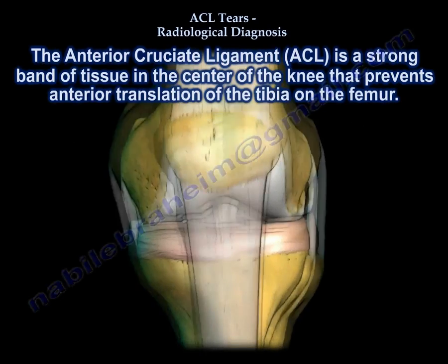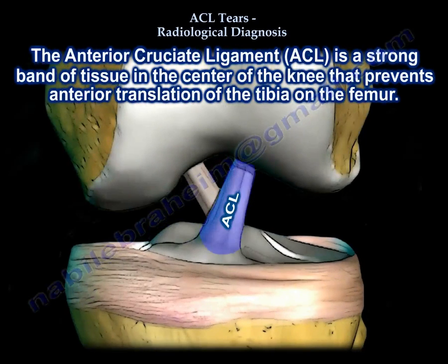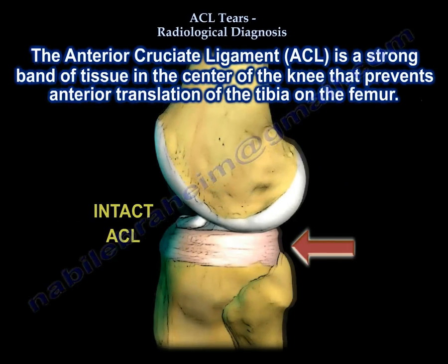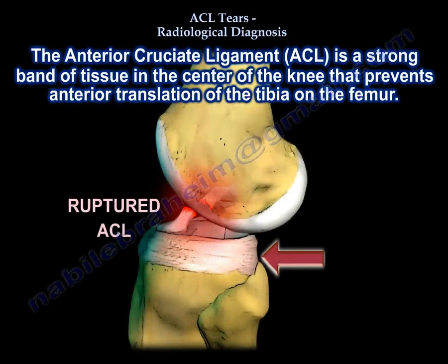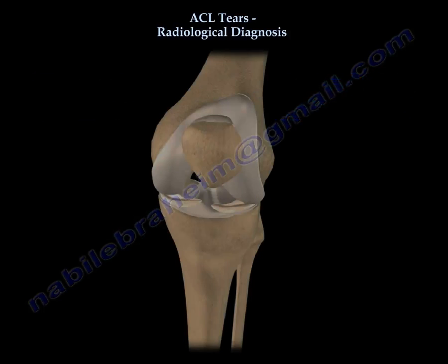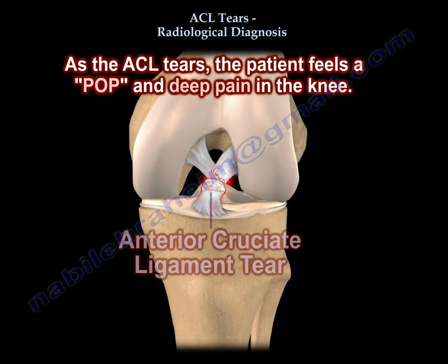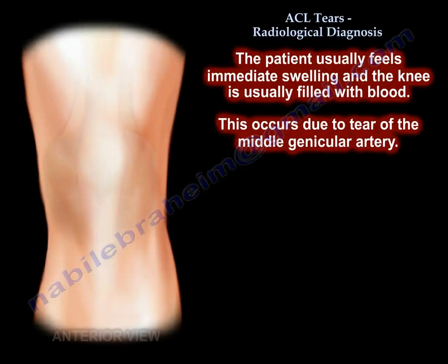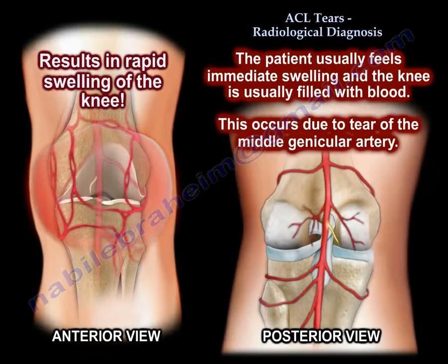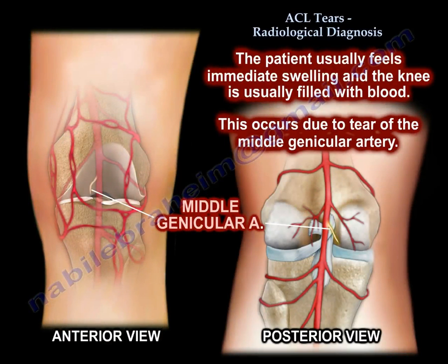ACL tears: radiological diagnosis. The anterior cruciate ligament is a strong band of tissue in the center of the knee. It prevents anterior translation of the tibia on the femur. The mechanism of injury is usually a non-contact pivoting injury. As the ACL tears, the patient feels a pop and a deep pain in the knee, usually with immediate swelling. The knee is usually filled with blood due to tear of the middle genicular artery.